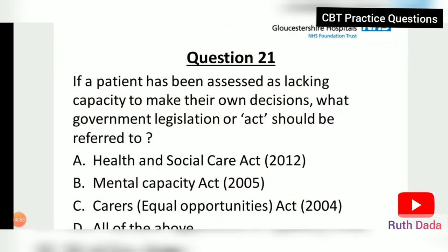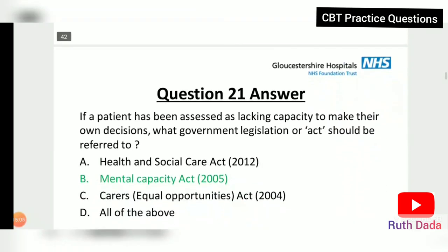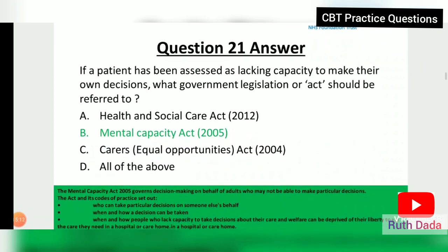Question 21: If a patient has been assessed as lacking capacity to make their own decisions, what government legislation or act should be referred to? The Mental Capacity Act (MCA). The Mental Capacity Act covers decision-making on behalf of adults who may not be able to make particular decisions.